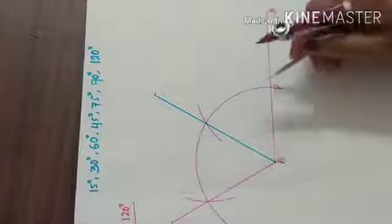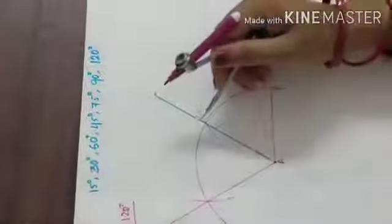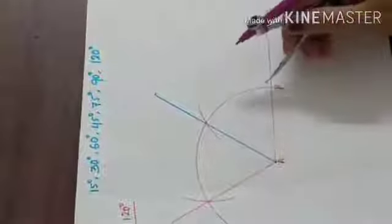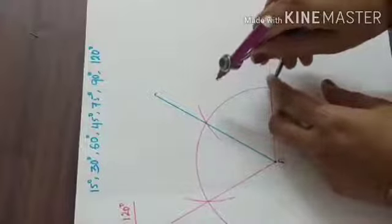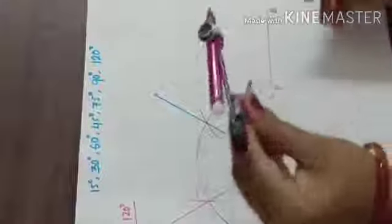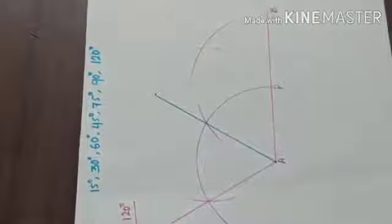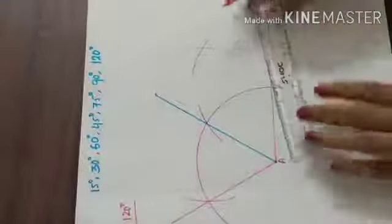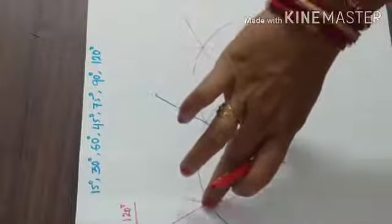Again I want to draw 30 degree. As you know, 30 degree is the bisector of 0 and 60 degree. So keeping your compass at point P as center, make one arc. Then taking the 60 degree point as center, make another arc. You will get an intersecting point. Construct a line through it and this angle measures 30 degree, this angle measures 60 degree, and this angle measures 120 degree.